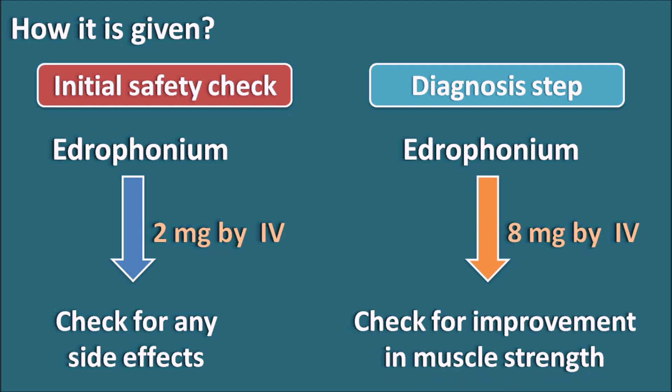If the muscle strength is improved, then the muscle weakness is due to myasthenia gravis. If muscle strength is not improved after the injection, the possible reason for muscle weakness is not myasthenia gravis. In this way, the Tensilon test uses Edrophonium to diagnose myasthenia gravis quickly within 10 minutes. Edrophonium is a short-acting drug with only peripheral action, which is why it is selected for diagnosis but not for treatment. However, under emergency conditions, an Edrophonium injection may sometimes be given in myasthenia gravis crisis to improve muscle strength.